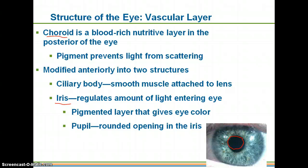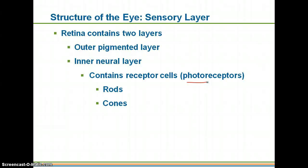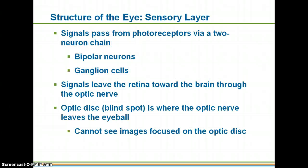The retina, your neural or sensory layer, has two layers within itself: an outer pigmented layer and an inner neural layer. That neural layer contains your receptor cells — photoreceptors. Photo means light, so they detect light. You have two types: rods and cones, responsible for detecting different kinds of light. Once the receptors detect light, they transmit an impulse along bipolar neurons — which we really only find in the special senses — to a ganglion cell, and then out through the optic nerve to the brain.